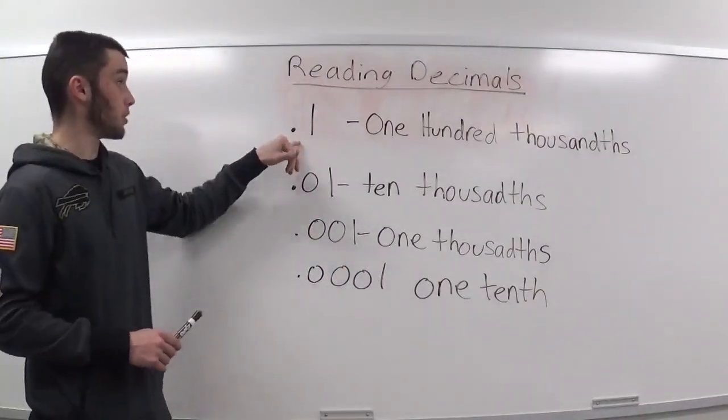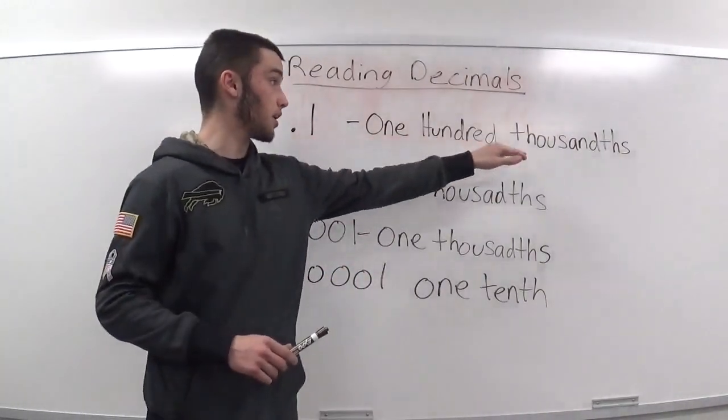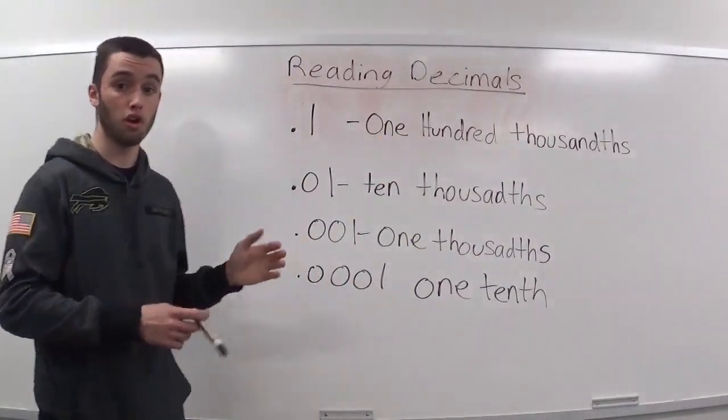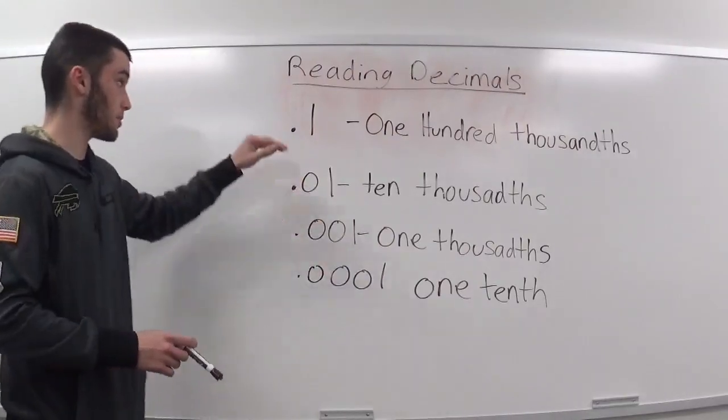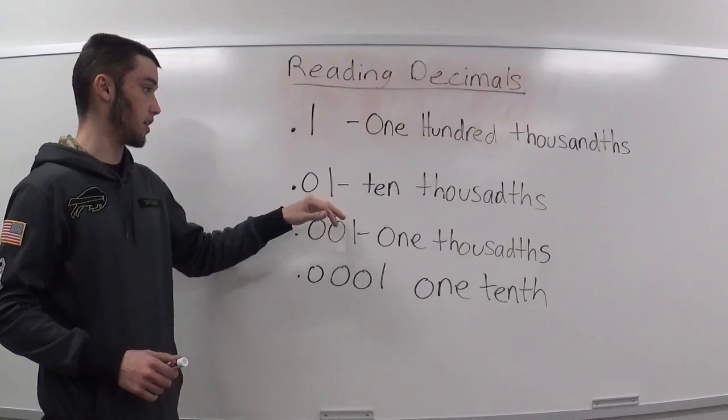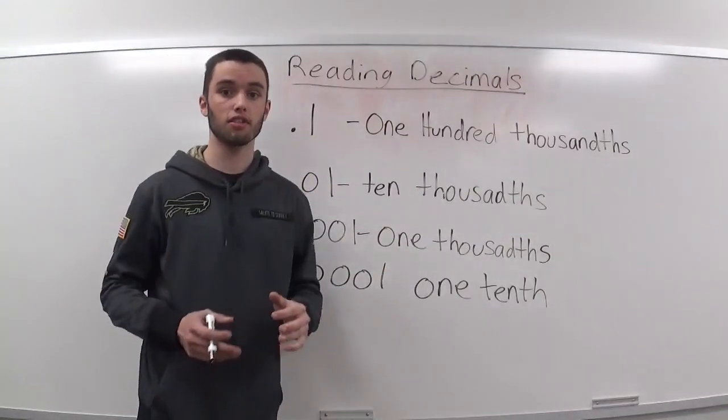Here we have .1, that is one hundred thousandths. When I say one hundred thousandths, I'm saying I have one hundred thousandths of an inch, that would be .1, that's the first decimal place here. Over here I got .01, that's ten thousandths, so I have ten thousandths of an inch.